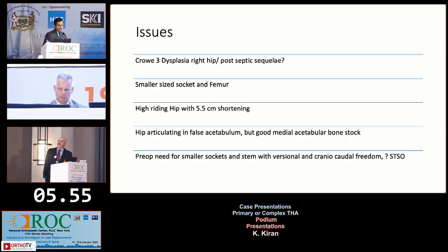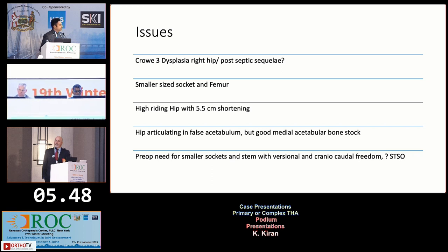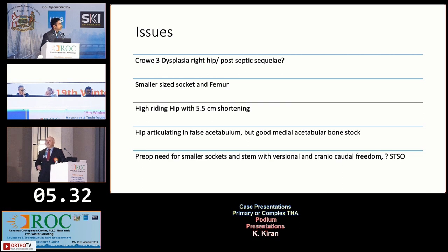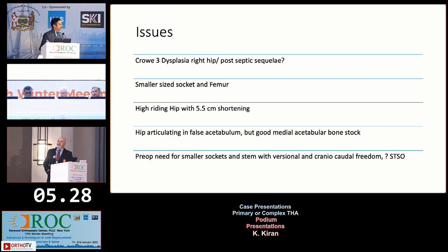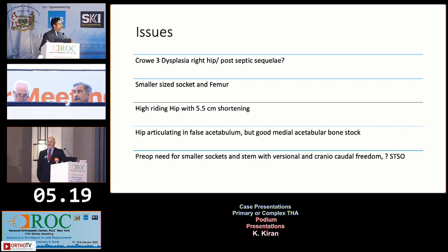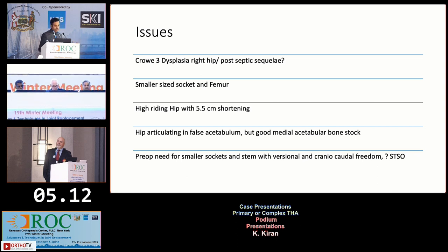The diagnosis looked like Crowe 3 dysplasia, but because of the bullets and the flexion deformity — which is not a very common finding in a dysplastic hip, which tends to be more mobile — we wondered if it could be a post-septic sequela. It's not a typical-looking dysplastic hip, and it's a male, so I would have bet it was a childhood septic hip. Both have a very different approach: a septic hip is tighter with a high probability of needing shortening, whereas with a dysplastic hip, nerve tension would dictate whether shortening is needed.